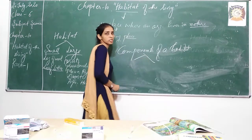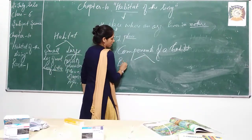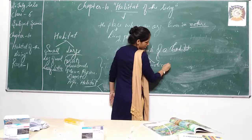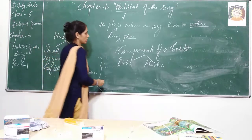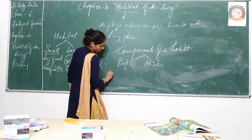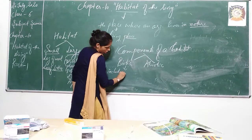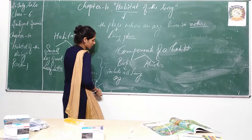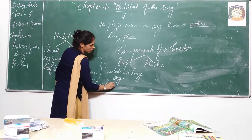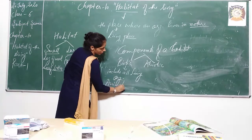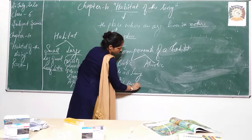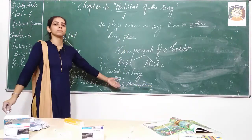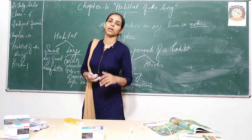Components of habitat are of two types: biotic and abiotic components. Biotic means that it includes all living organisms — for example, animals, humans, and all plants. They are living organisms because they show properties like breathing, reproduction, and movement.